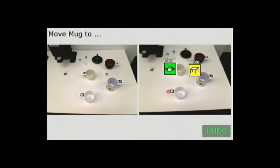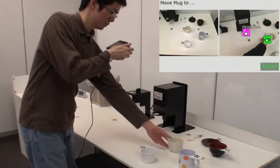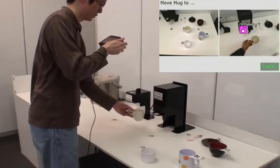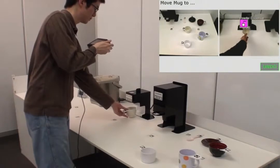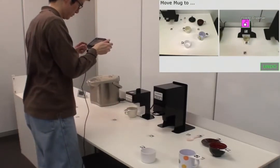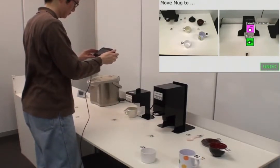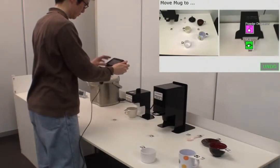After selecting this action, we show where the mug should be placed using another photograph. In this case, we move the mug to a coffee powder dispenser. Note that the robot is absent.